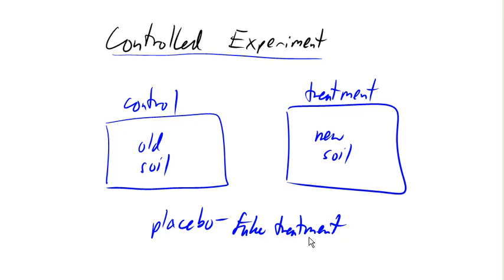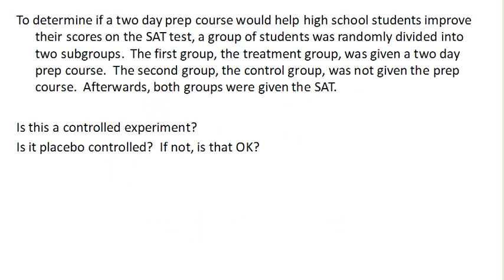So let's look at some examples. To determine if a two-day prep program would help high school students improve their scores on an SAT test, a group of students were randomly divided into two subgroups. The first group, the treatment group, was given a two-day prep course. The second group, the control group, was not given the prep course. Afterwards, both groups were given the SATs.